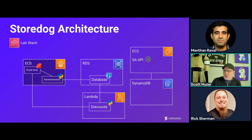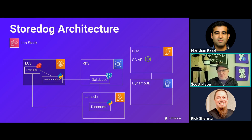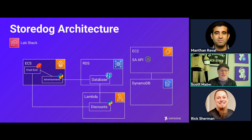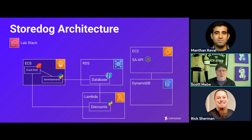What we're launching today is called Storedog — it's all the cool Datadog swag you can't actually have, but we can simulate it. There's going to be at least one EC2 instance, some database infrastructure with Postgres running on RDS, and some Lambda functions for the serverless aspects. We're also going to work with containers — that's ECS, Amazon's Elastic Container Service — where we'll have a front end working with an advertisement service. Don't worry, you don't need to do any real hands-on coding.